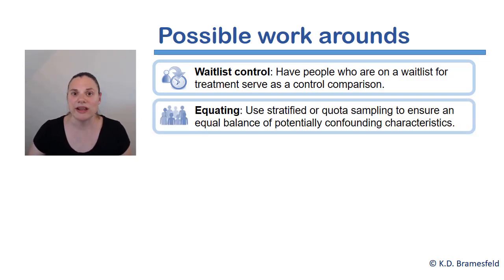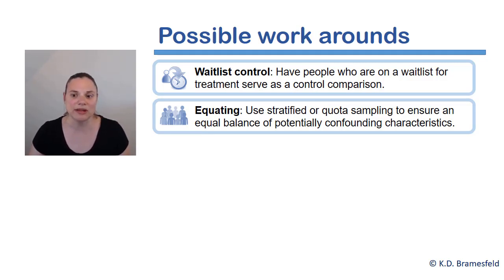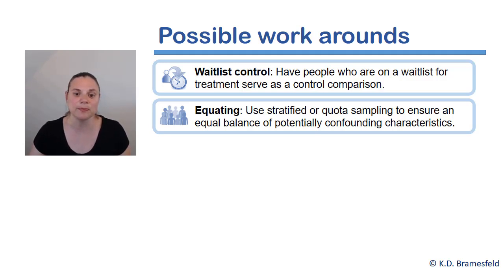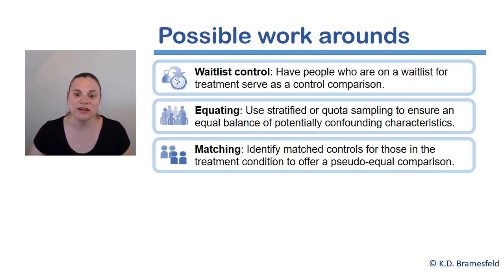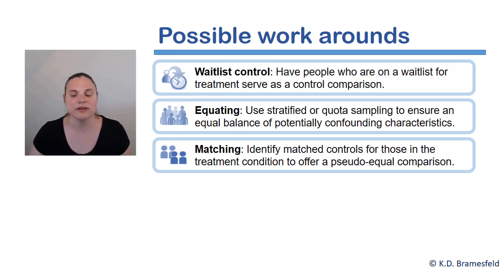Equating occurs when a researcher uses stratified or quota sampling to ensure a relatively equal balance of potentially confounding characteristics within the sample. And matching occurs when researchers are able to identify matched controls for those in the treatment condition to offer a pseudo-equal comparison.